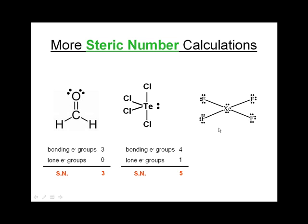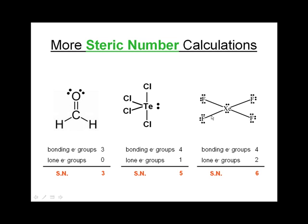We're going to consider even higher steric numbers. Let's look at the xenon atom in the XeF4 molecule. There are four bonding electron groups around the xenon — one, two, three, four atoms bonded to it. There are also two lone electron groups, which add up to a steric number of six.